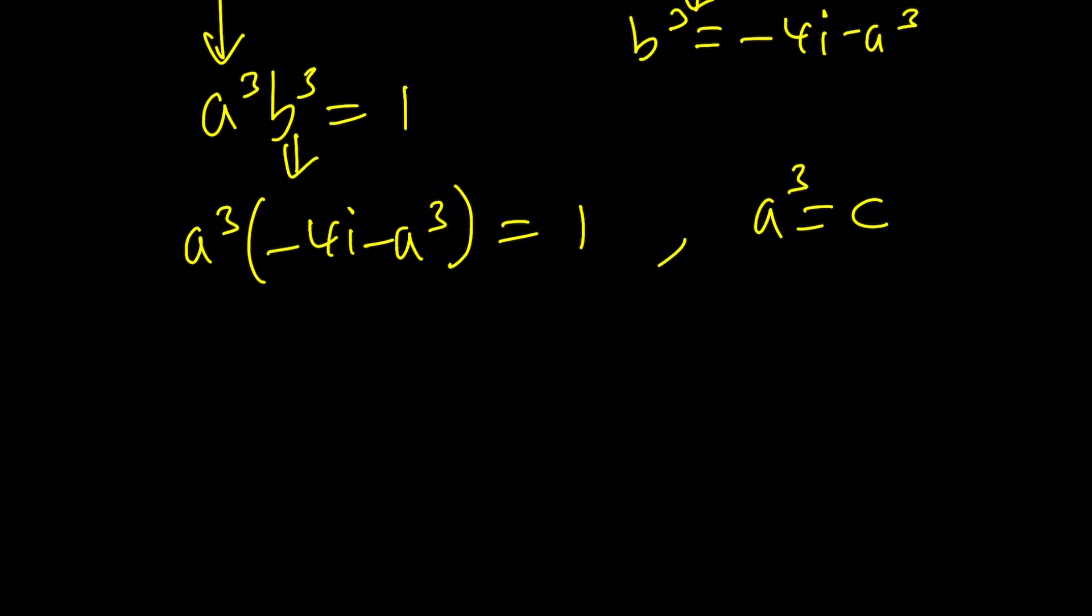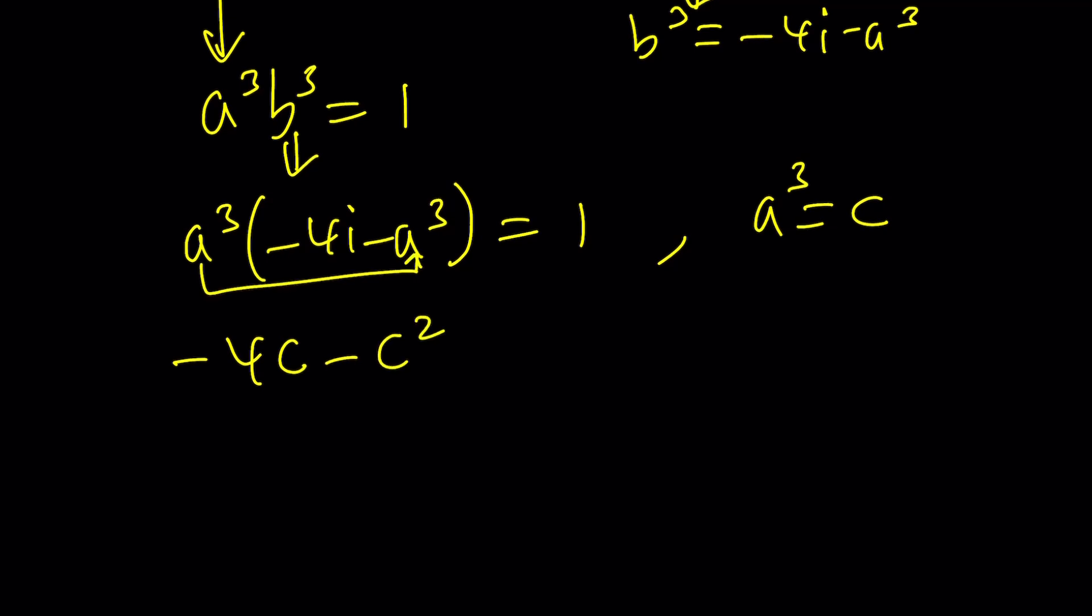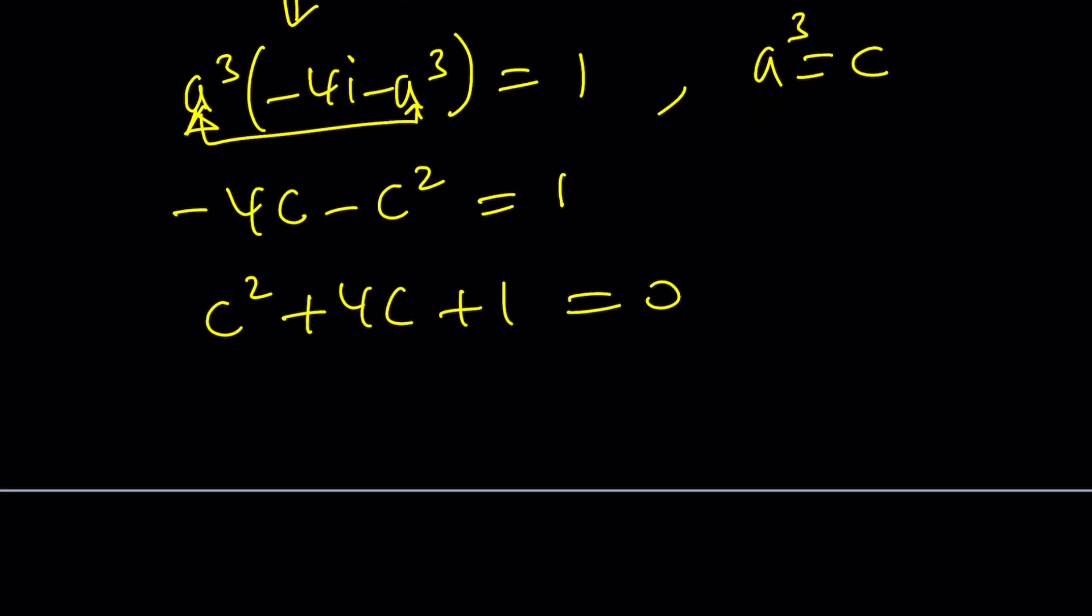And then that's going to give you a quadratic equation, if you distribute and call a cubed equals c. That's basically the cubic formula. Not too hard, not too easy, somewhere in between. Let's go ahead and distribute. That is going to give us negative 4c minus c squared. When you multiply c by c, you get c squared. Equals 1. This one has a nice solution.